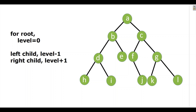Now let us calculate how we got the levels. For the root, the level will always be zero. Whenever we traverse left, it will be minus one, and when we traverse right, the level will be plus one of the parent. So C will have level plus one.